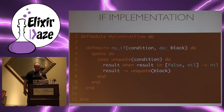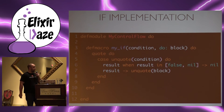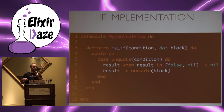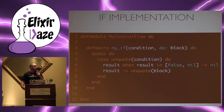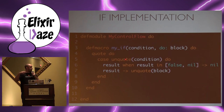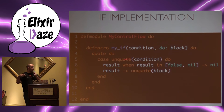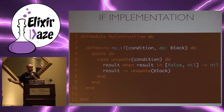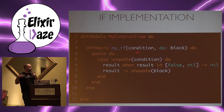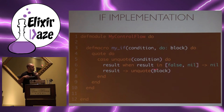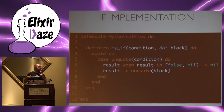Let's actually implement our macro. We unquote our condition — which is one == two — inside the quote block. Basically, we're returning an AST from the quote block, but unquote says: I want the actual evaluated value here. One == two is false, so we return something like case false, which will return nil. Otherwise, we unquote the block and inject that value back into our macro.